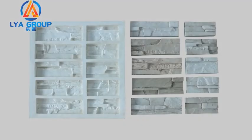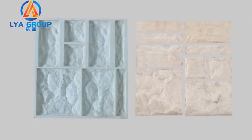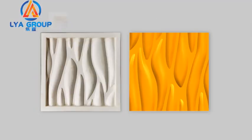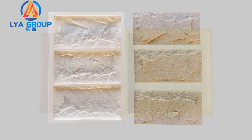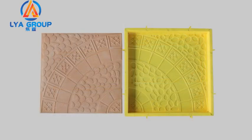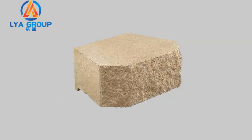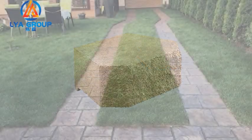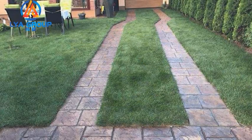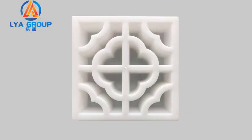Our wet concrete casting system is available for products like artificial stone, cultured paving stone, 3D wall panels, concrete slabs, flagstone, paving blocks, retaining blocks, freeze blocks, and more.